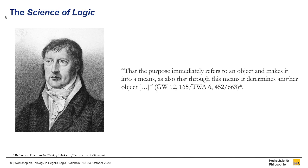This suggestion is confirmed by the way Hegel afterwards writes about both kinds of relationships—the immediate and the mediated one. The quote reads: 'that the purpose immediately refers to an object and makes it into a means, as also that through this means it determines another object.' So, besides an immediate realization, there is also a mediated one, which is mediated through a relationship of the means to an external objectivity.